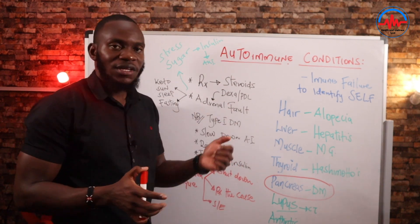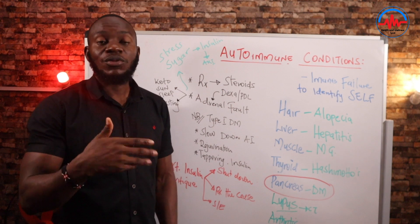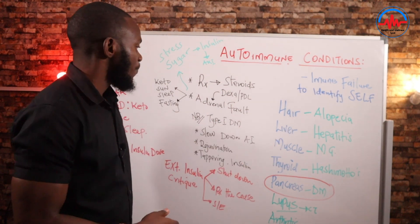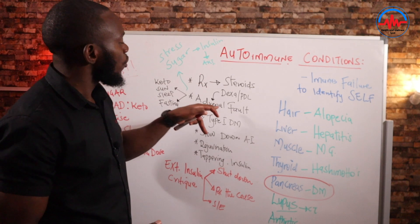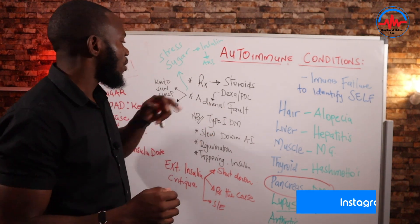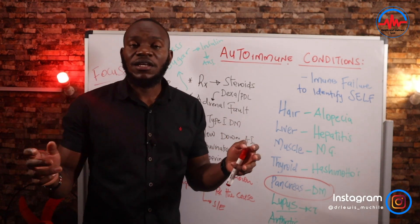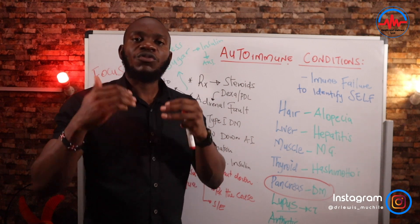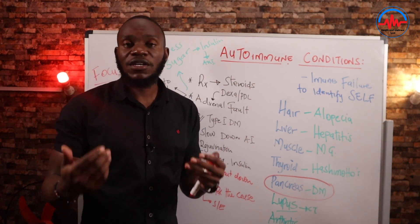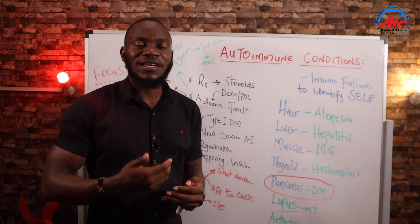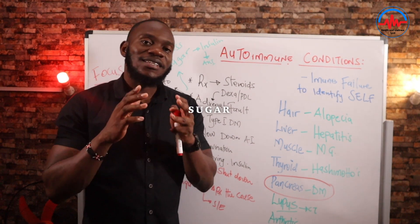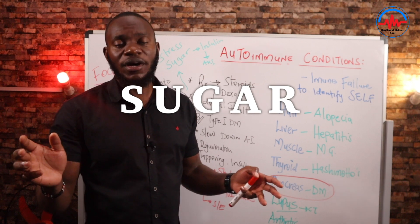So if we handle the fault, then the aftermath will disappear. Those symptoms will disappear and you start recovering from autoimmune conditions. The fault is in the adrenal glands. The cause of dysfunction in the adrenal glands comes down to two things. Number one is sugar directly — consumption of carbohydrates. That will affect the adrenal glands.